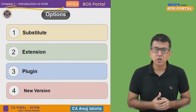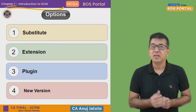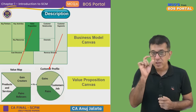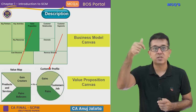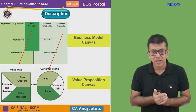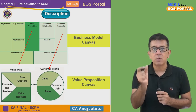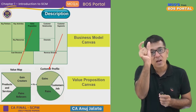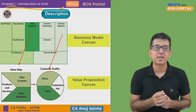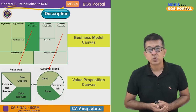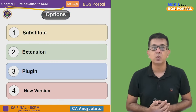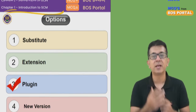Out of the four options, the third one makes the maximum amount of sense. The value proposition canvas is a plugin to the business model canvas. Plugin means it will make your business model canvas far more effective and give you more in-depth knowledge of the two segments — value proposition and customer segment. So out of the four options on the screen, the correct answer is the third one: plugin.